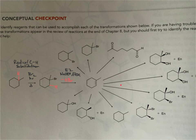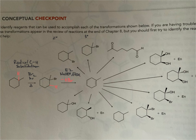Going in a clockwise fashion around the starburst, let's talk about the first two products together. The first one is a secondary bromide and the next one is a tertiary bromide. Drawing in the implicit hydrogen, we can see the concept of regioselectivity — how the elements of HBr are added to those two carbons. Here we get the least substituted bromide, and here we get the most substituted bromide.